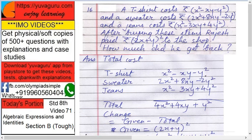This is the total cost of all these items, and this is the amount he has paid. We have to subtract the total cost from the amount paid. So first, we will find out the total cost — write down all these things and add them.